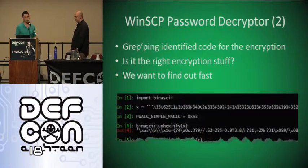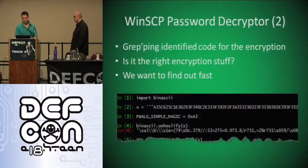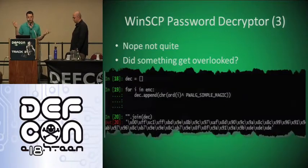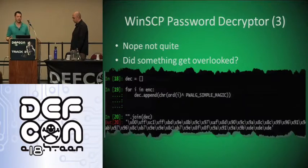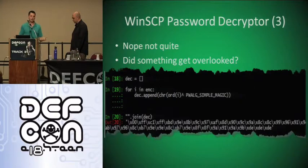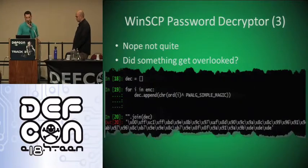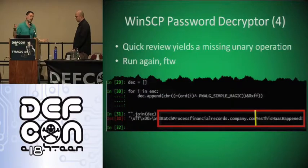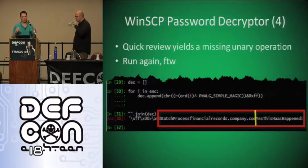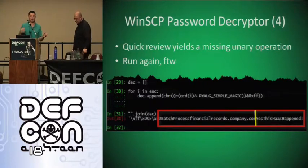The first thing I did was pop up iPython, import binascii, unhexify it, and now I have the data to work with. I went through and wrote the decryption implementation. Unfortunately I made a mistake because the output wasn't anything legible. I went back and reviewed and noticed I left a tilde off for the unary operation.